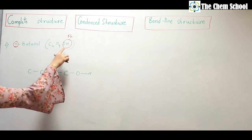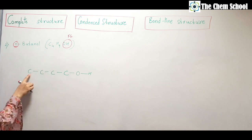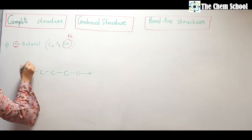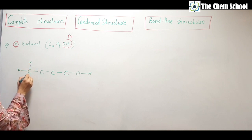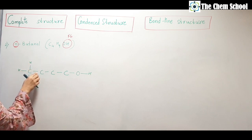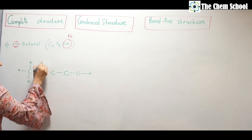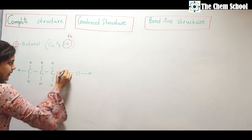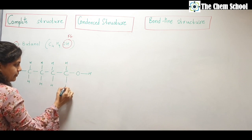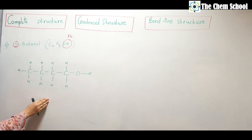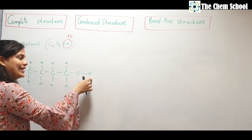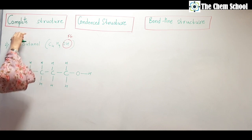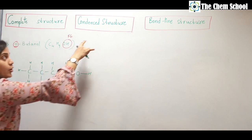Oxygen already has two bonds, so then attach hydrogens to the remaining carbons so each carbon has four bonds. Check: each carbon has four bonds, oxygen has two bonds, and each hydrogen has one bond. This is the complete structure for n-butanol.